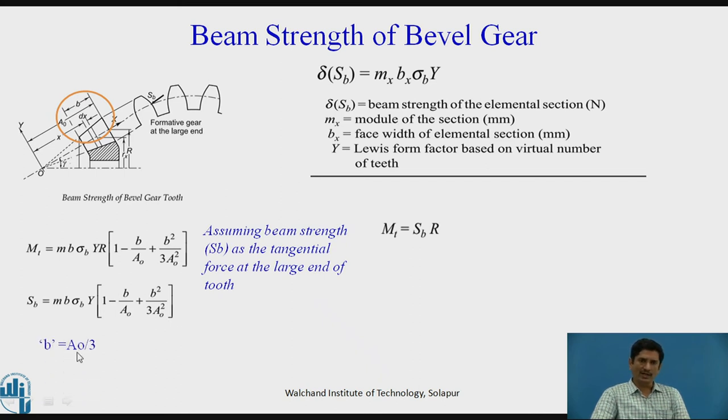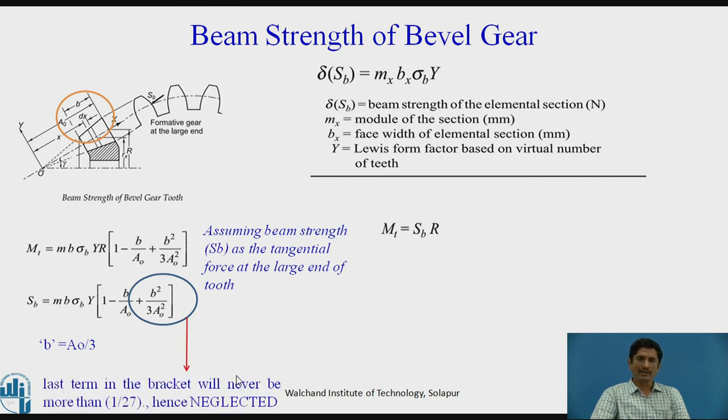However, we know that B equals A naught by 3. Therefore, this last term in the equation of SB will never have a value more than 1 by 27. Hence, we neglected it. Therefore, SB equals MB sigma B Y times bracket 1 minus B by A naught. Here, we can define that the factor 1 minus B by A naught is a bevel factor.